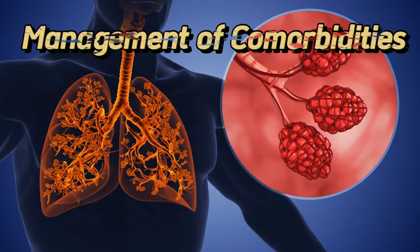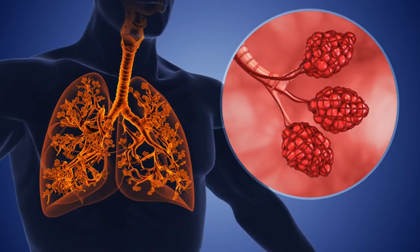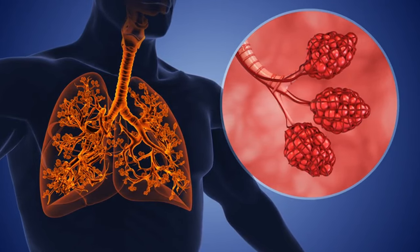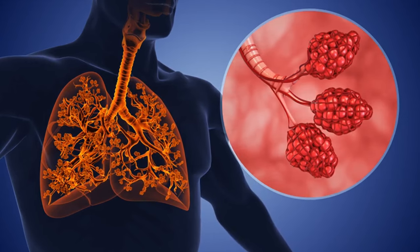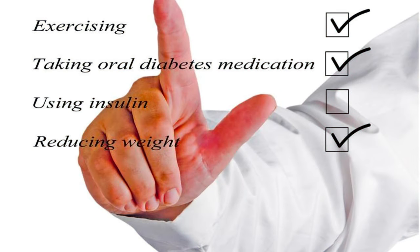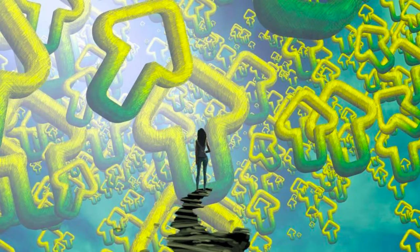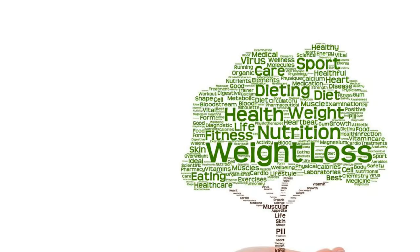Managing comorbidities is also paramount, given the close association between NAFLD and metabolic syndrome. Optimal control of obesity, type 2 diabetes, dyslipidemia, and hypertension — through medication, lifestyle modifications, and regular monitoring — can help mitigate NAFLD progression and reduce complication risk. By embracing a holistic approach encompassing lifestyle modifications, weight management, pharmacological interventions, and vigilant monitoring, patients and healthcare providers can navigate the path to wellness and reclaim liver health.